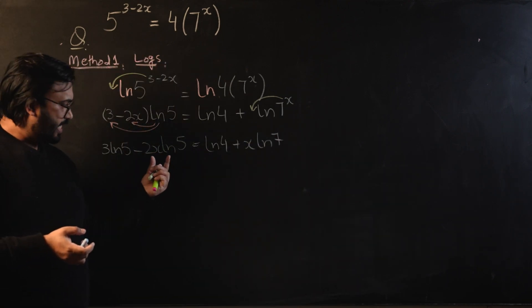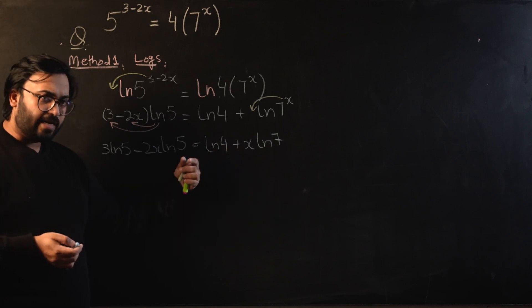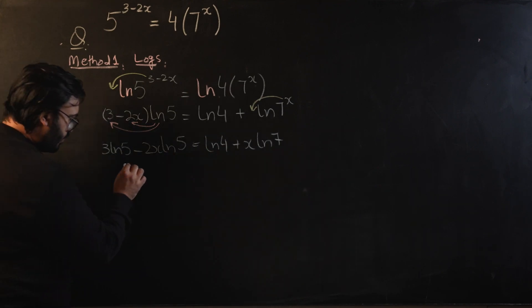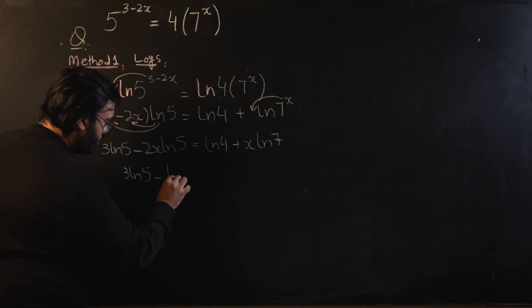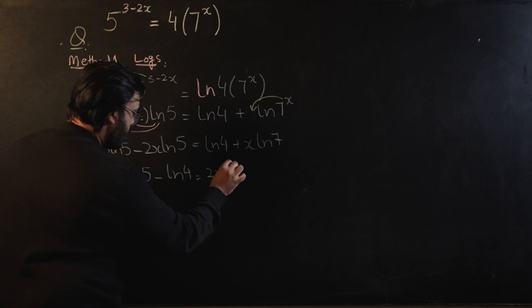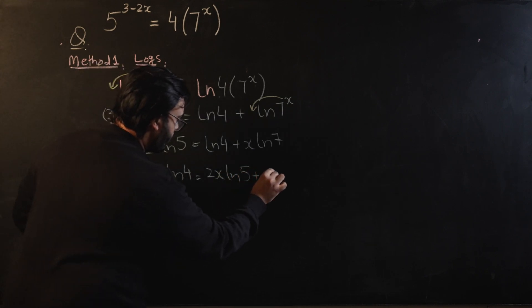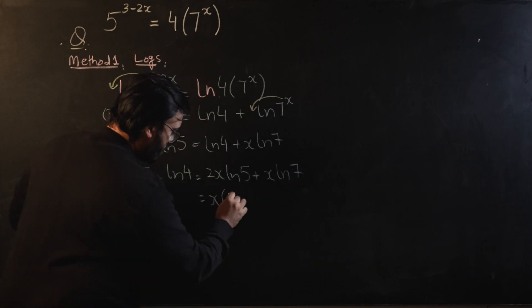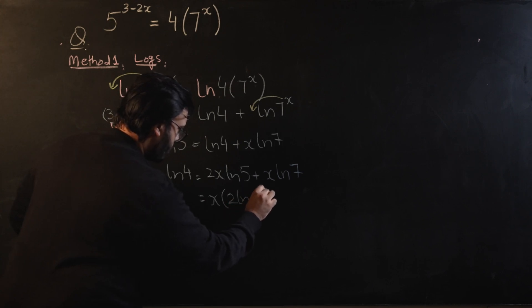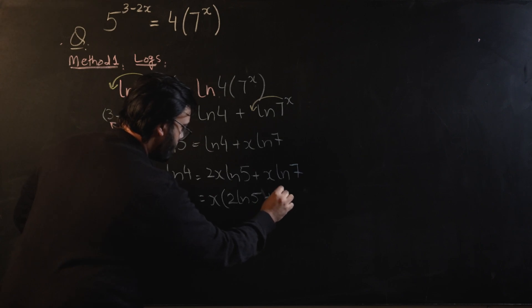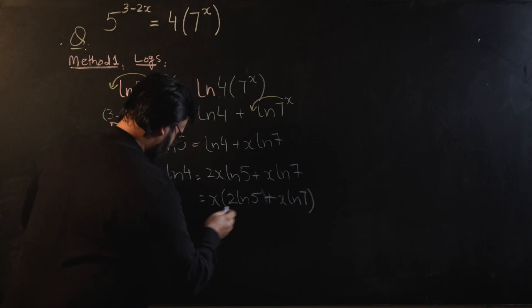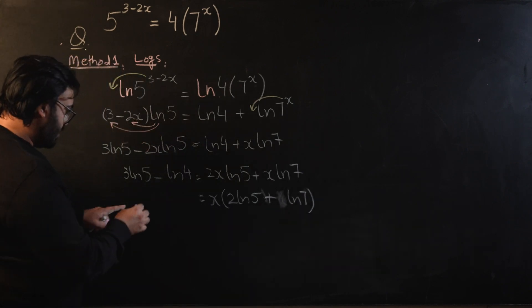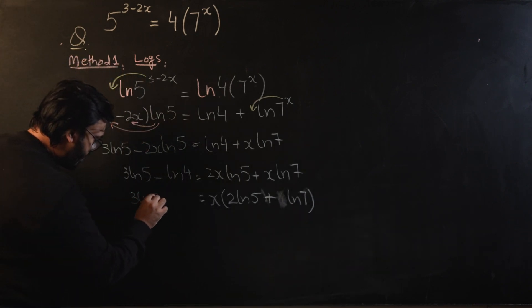Once we've reached this point, it's just a simple case of isolating the x terms. Taking the two x term to the right and log four to the left gives us: three log five minus log four equals two x log five plus x log seven. Now taking x as a common factor on the right-hand side gives us x times the bracket two log five plus log seven.